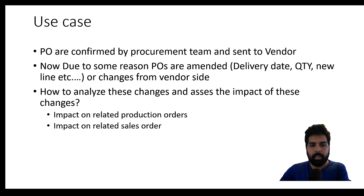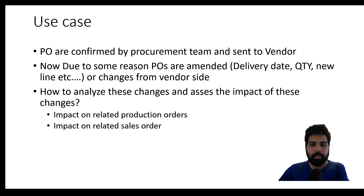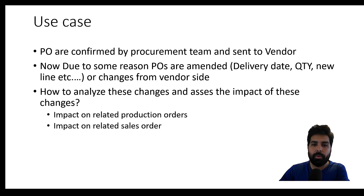Let's understand the use case. Purchase orders are confirmed by the procurement team and released to the supplier. Due to some changes, POs may be amended — it can be delivery date, quantity, new line additions, or changes from the supplier side due to fulfillment requests. As a procurement team, it is very important to understand the impact of these changes downstream. The related orders to this purchase order can be your production orders, sales orders, or demands you have created.